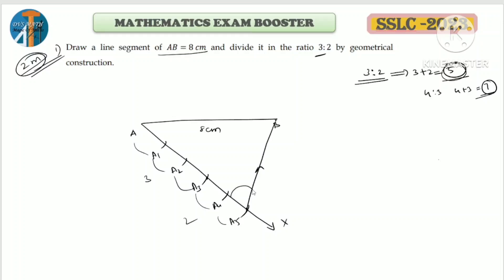Measure the divided line - you will get exactly the 3:2 ratio. This is how we construct and divide a line segment in the given ratio. For practice, try dividing 10 cm in ratio 4:3, and 12 cm in ratio 5:4.